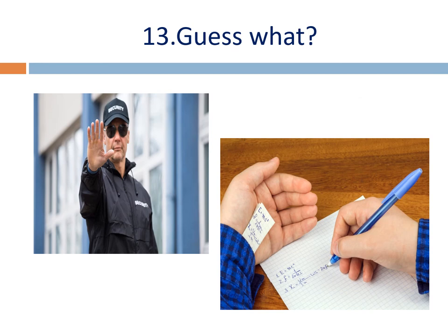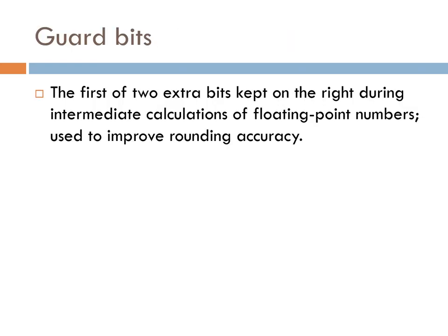You can see this case — he's got, and he is having a bit in his hand, so this is 'guard bits'. Guard bits means additional bits allocated during truncation. It is generally used for floating-point operations during rounding off, where we use some additional bits to improve the accuracy of results. The first two extra bits kept on the right during intermediate calculation of floating-point numbers are used to improve the rounding accuracy. This is guard bits.